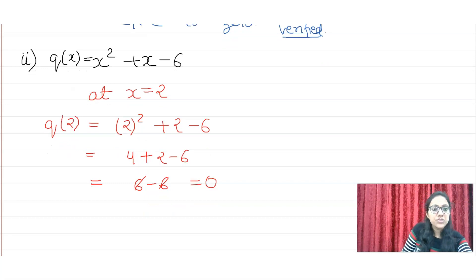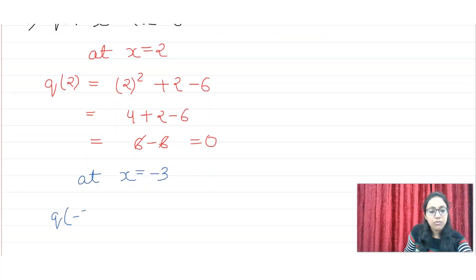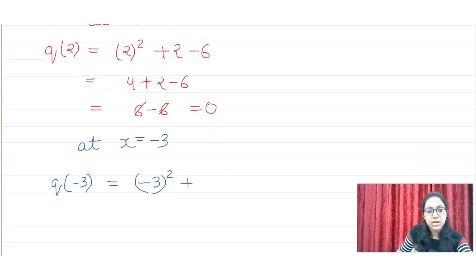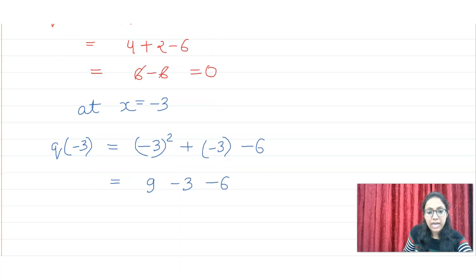Now checking at x = -3: Q(-3) = (-3)² + (-3) - 6, so here I get 9 - 3 - 6, which gives 9 - 9, and we get 0. Both opposite signs cancel and we get zero.